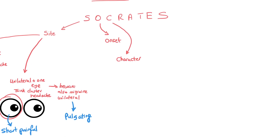So we've finished C. Let's go to R — Radiation, or where does the pain go. In headache, pain shouldn't go anywhere else. But if some patients have neck stiffness and fever, you need to start thinking of something more sinister, like meningitis. In this video, I'm going to focus mainly on tension headache, migraine, and cluster headache.